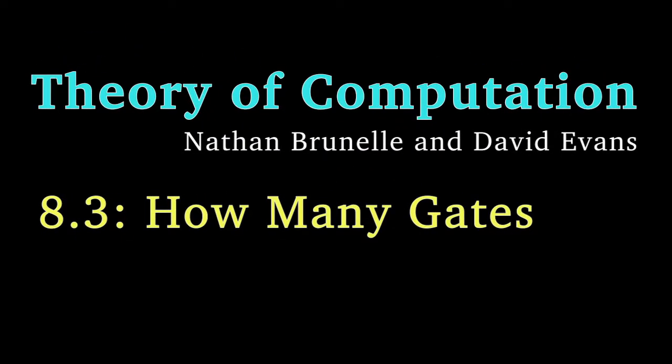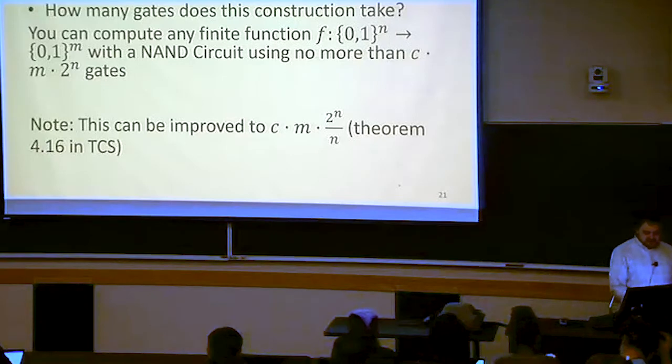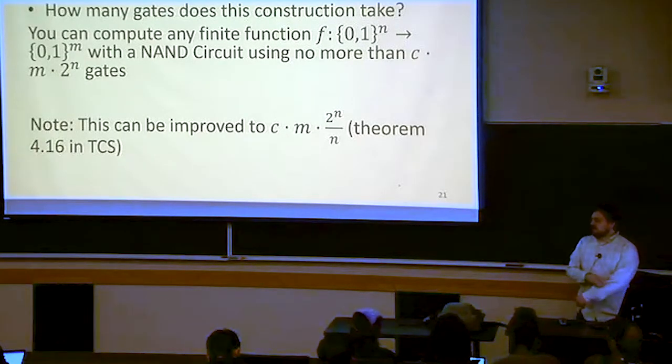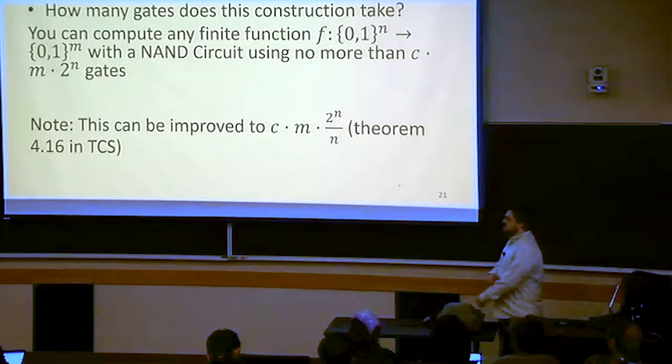So we know that every single function can be implemented. Now let's see how many gates this is going to require. How many gates is it going to require? How inefficient could this be?